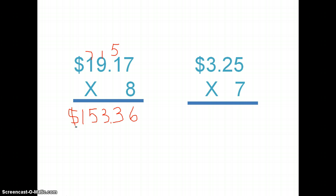And that's all I have to do to that problem. Let's try this one. Three dollars and twenty-five cents times seven. Seven times five is thirty-five. I write down my five, carry my three.